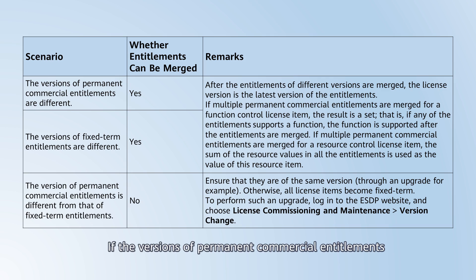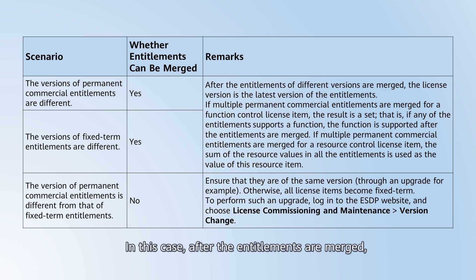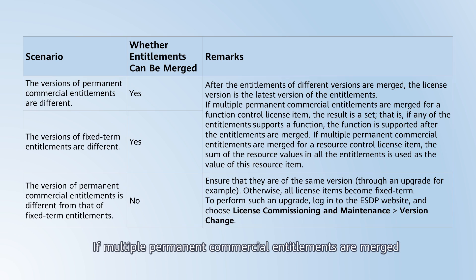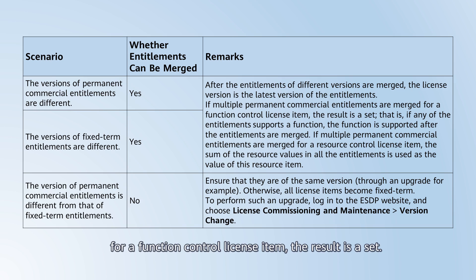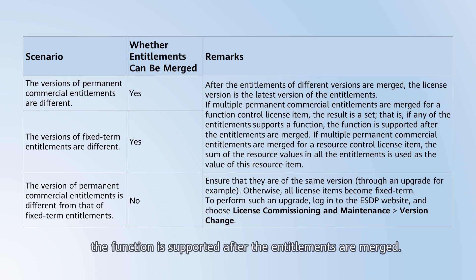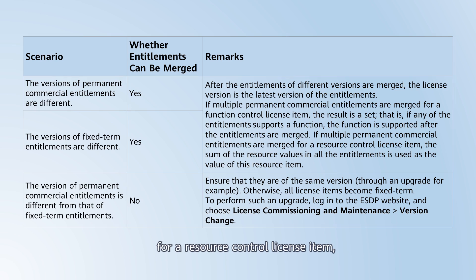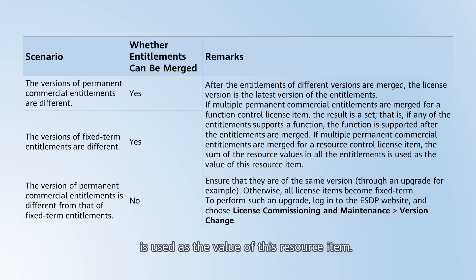If the versions of permanent commercial entitlements or fixed-term entitlements differ, the entitlements can be merged. After the entitlements are merged, the license version is the latest version of the entitlements. If multiple permanent commercial entitlements are merged for a function control license item, the result is a set — meaning if any of the entitlements supports a function, the function is supported after merging. If multiple permanent commercial entitlements are merged for a resource control license item, the sum of the resource values across all entitlements is used as the value of that resource item.